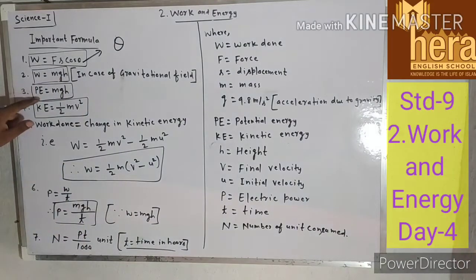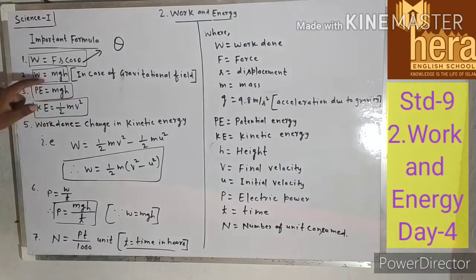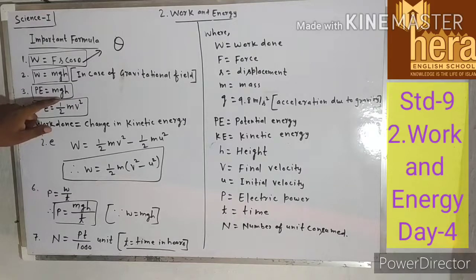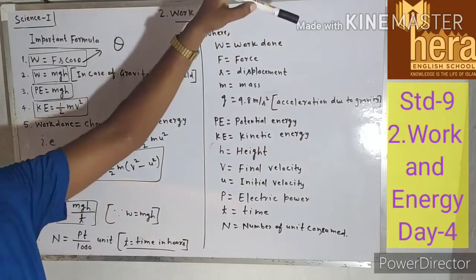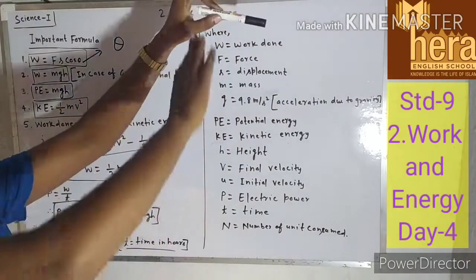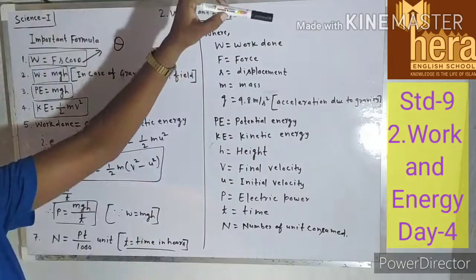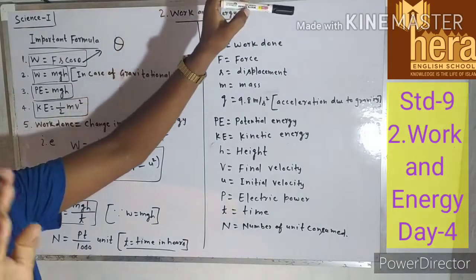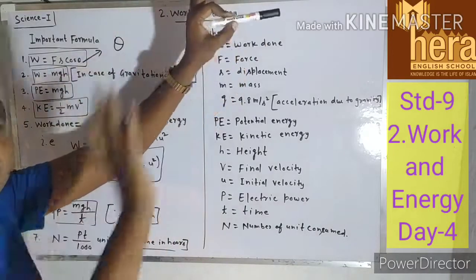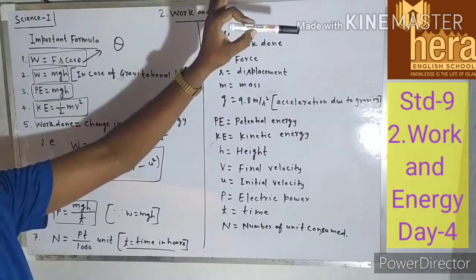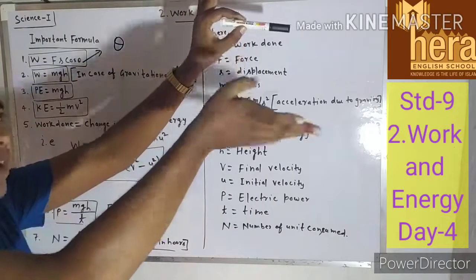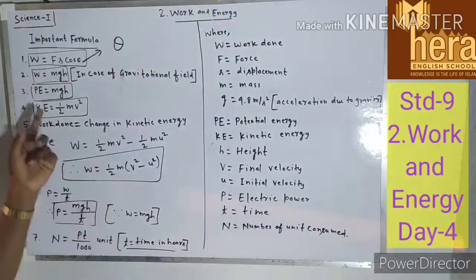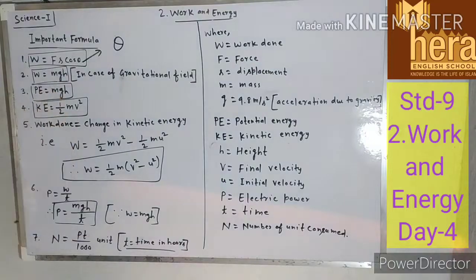Potential energy is equal to MGH. If any mass is at a height of 10 meters, the potential energy stored in that object will be equal to MGH, where M is the mass of the object, G is the acceleration due to gravity, and H is the height.